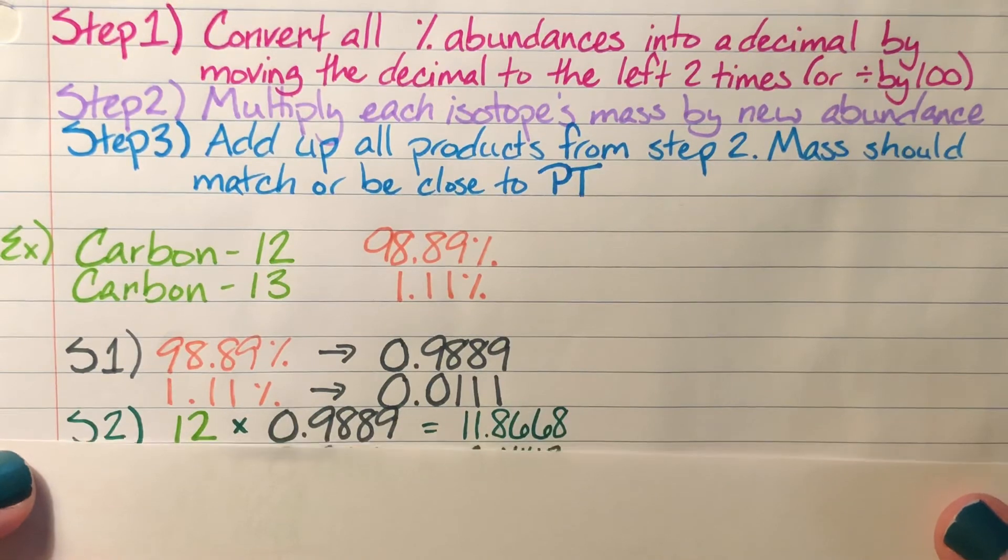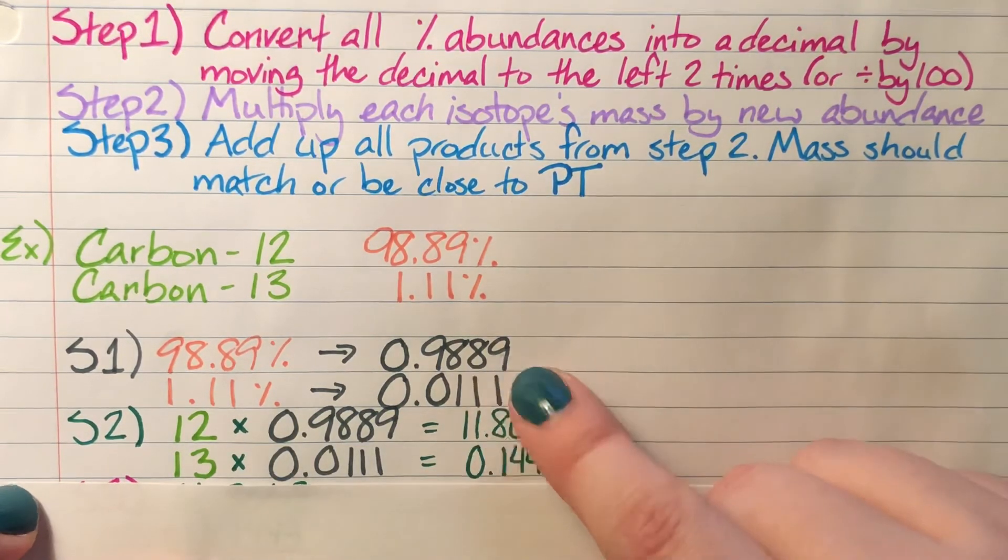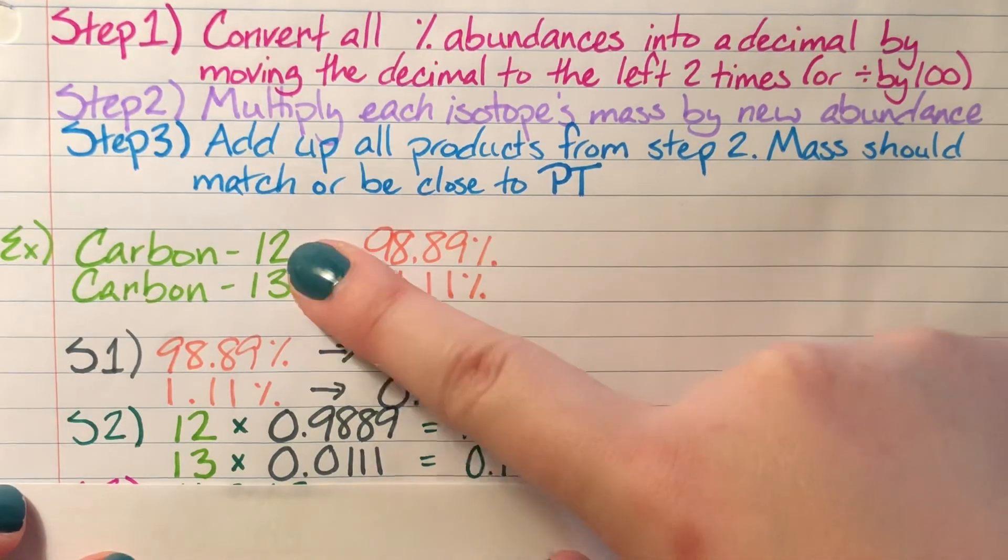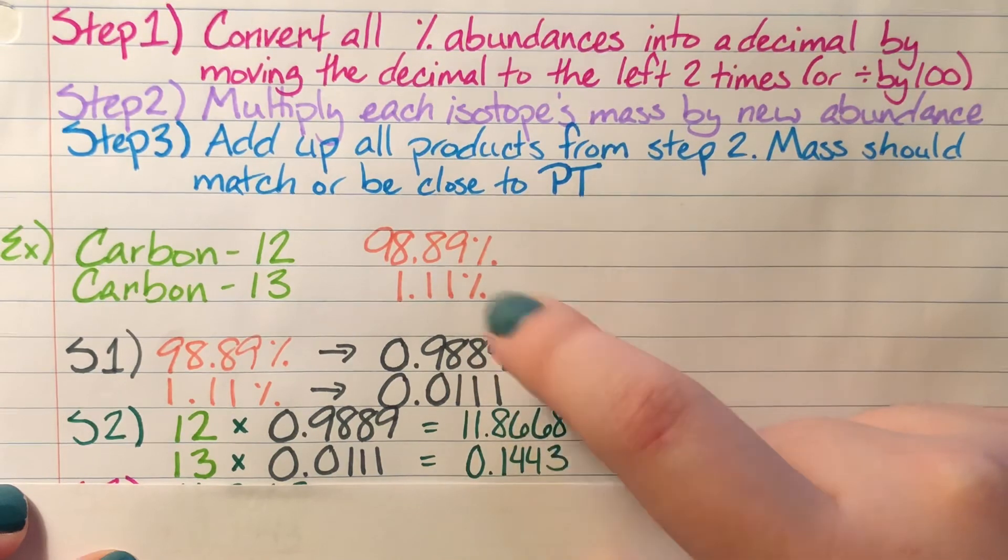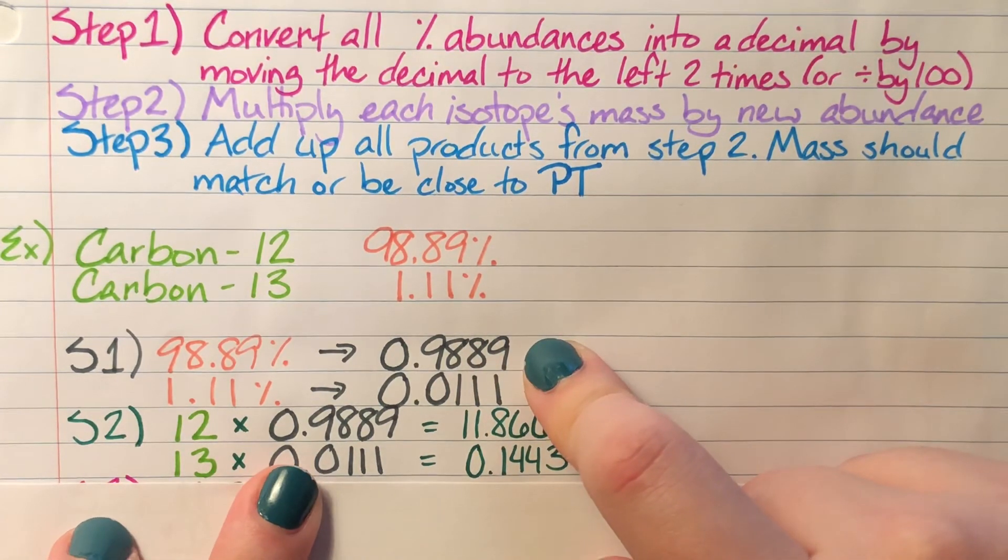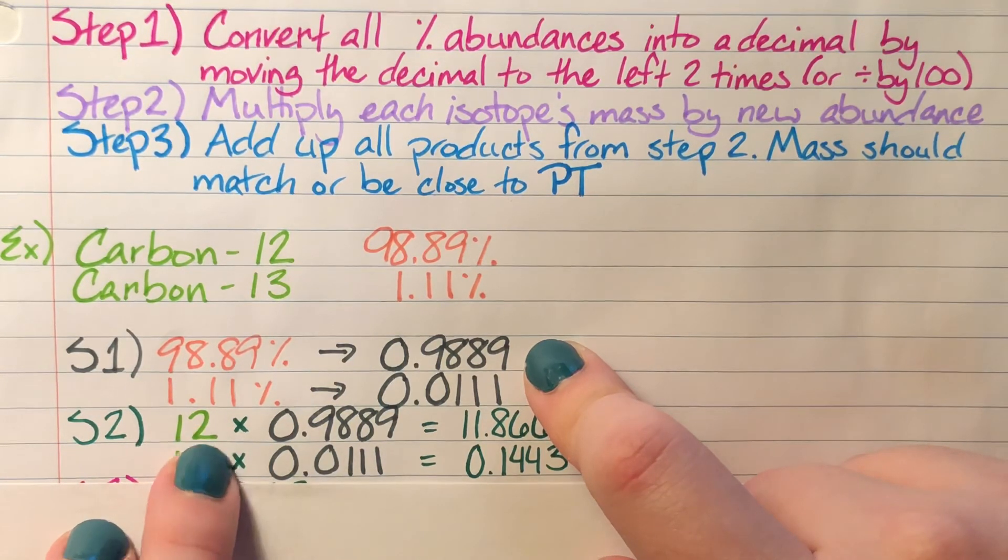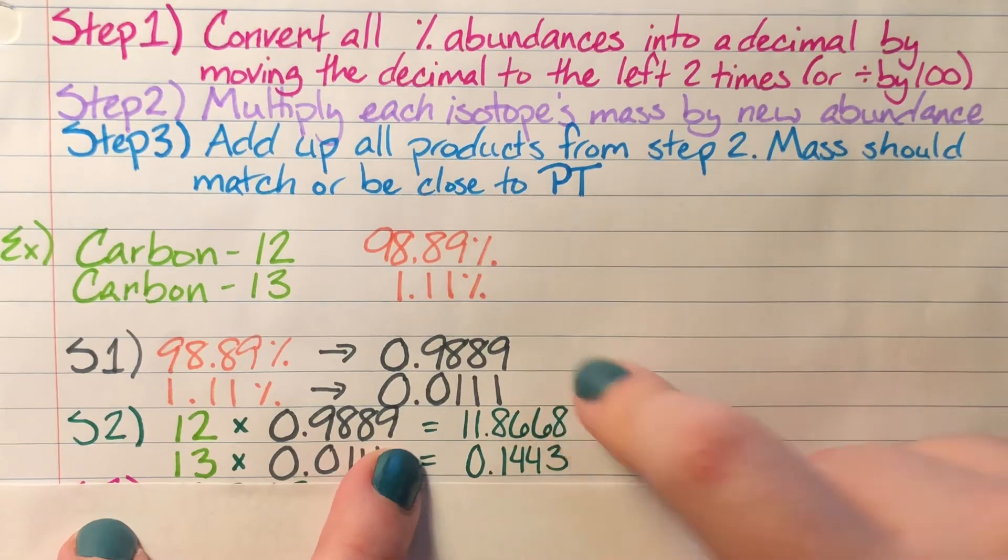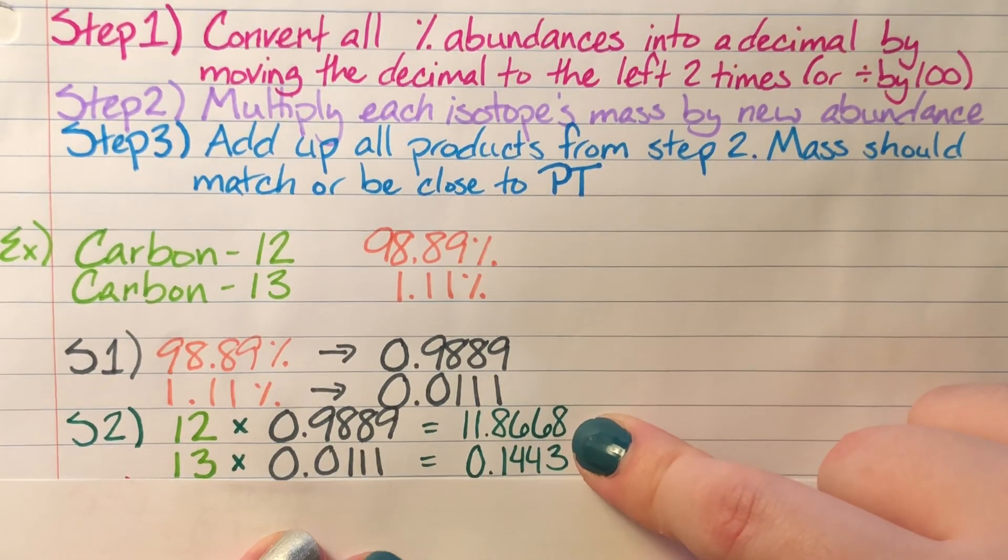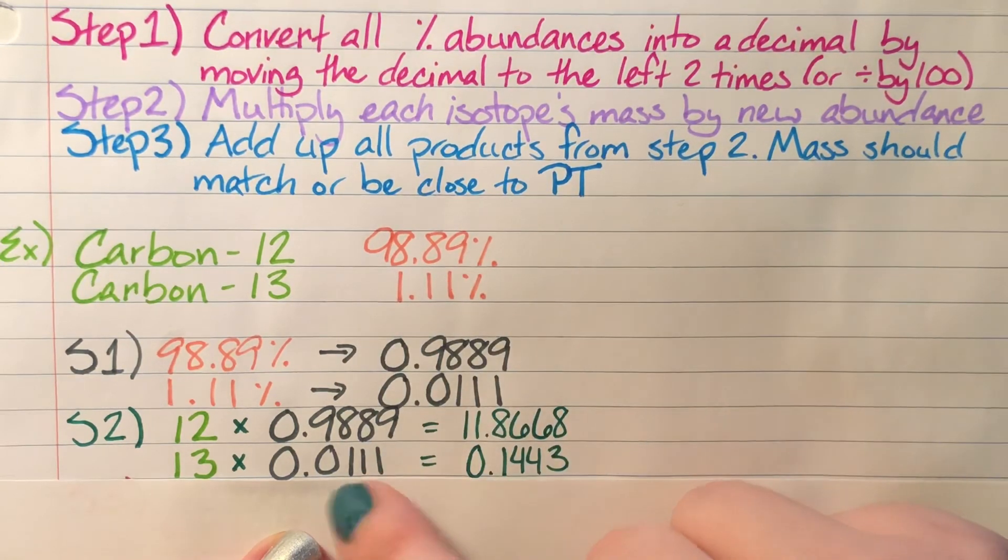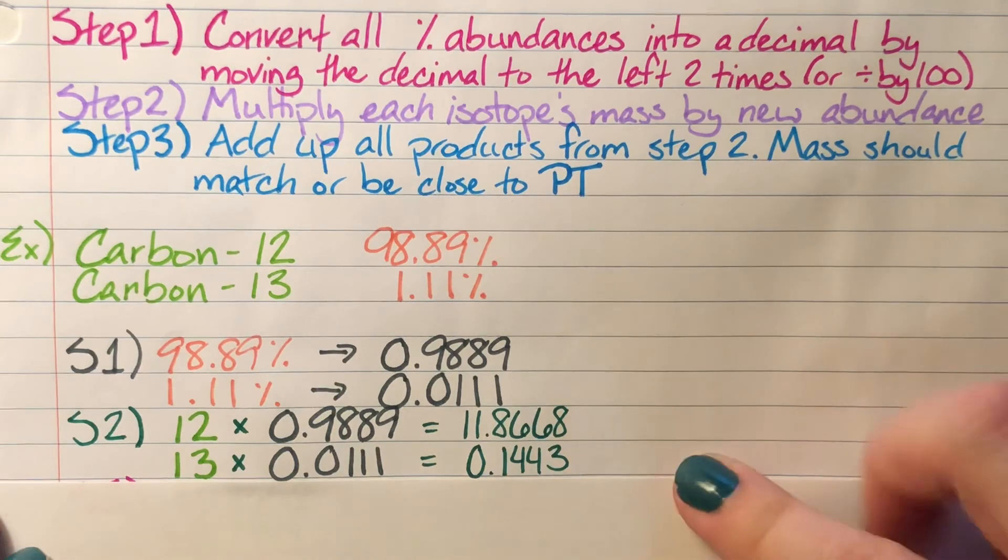For step two, we're multiplying each isotope's mass by our new number. I pulled the mass from my example—carbon-12—and multiplied it by the new abundance of 0.9889, getting 11.8668. I did the same for carbon-13, multiplying it to get 0.1443.